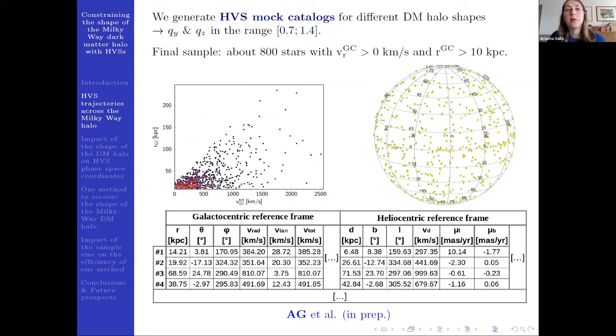And finally, through our numerical code, we generate HVS mock catalogs for different shapes of the dark matter halo, so for different axis ratios. We obtain a final sample of around 800 stars with positive radial velocities and located at more than 10 kiloparsecs from the galactic center. And for each star in our mock catalogs, we store the velocity and the position in both the galactocentric and the heliocentric reference frames.